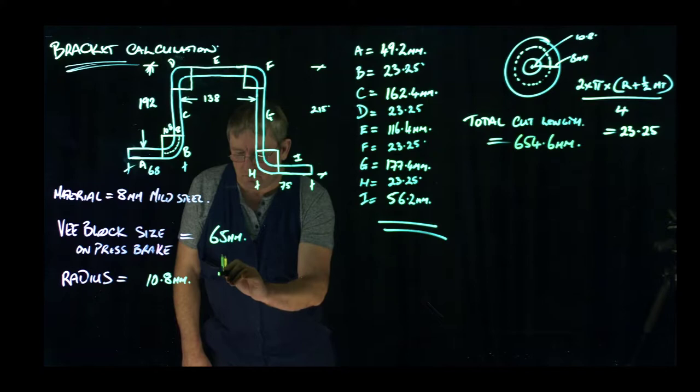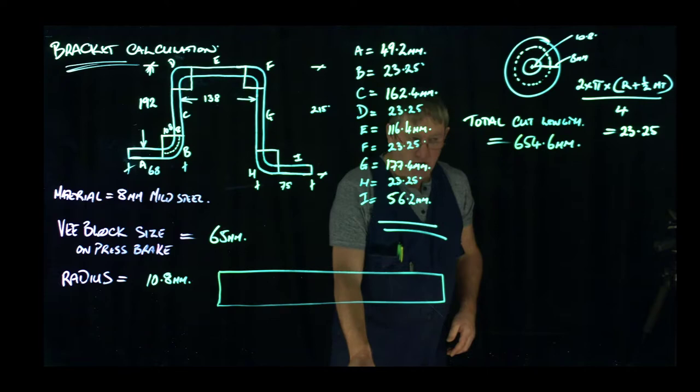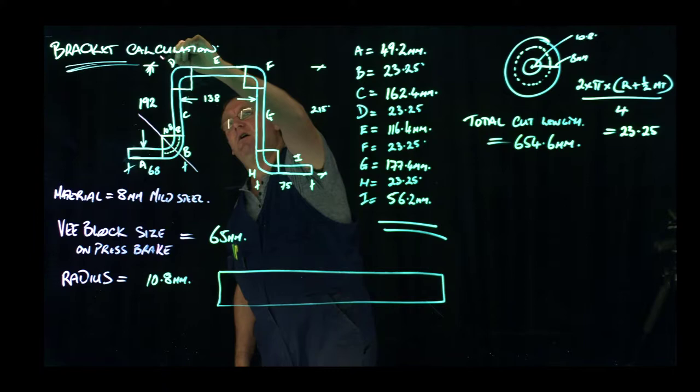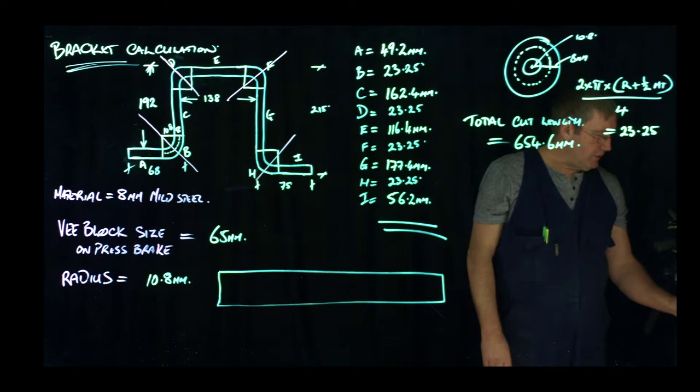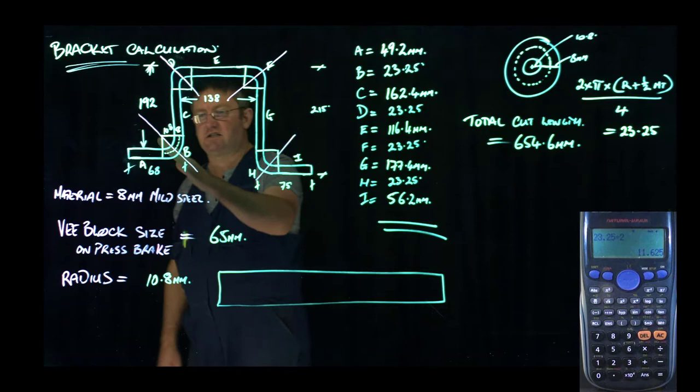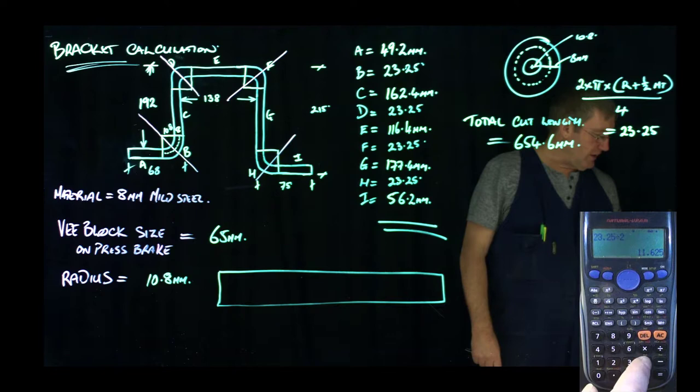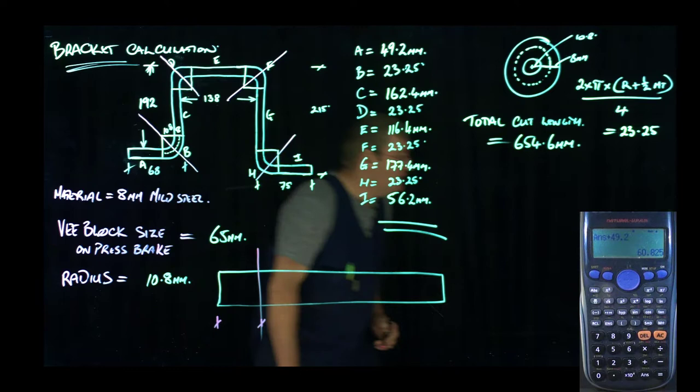And now, the next thing that we would do when we want to form it up, we're actually going to work out where our fold positions are. And our fold positions, when we hit it with the tooling on the press brake, is going to come straight through the center of each corner. So we can work out the position for the first fold. What that's going to be is 23.25 divided by 2, because that's half - it's actually going through half the corner length. The corner length was 23.25, we're going to cut that in half. So I've just done that on the calculator, and I need to add the first straight to that, which is 49.2. So our first fold position on the bar, from the end to this position here, would be 60.825. Now you'd round that to 61mm.